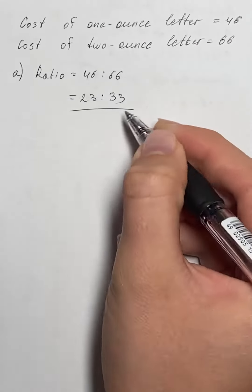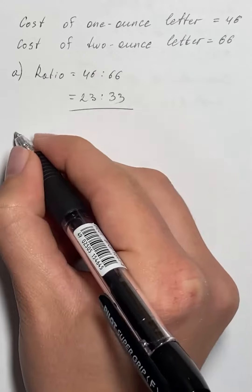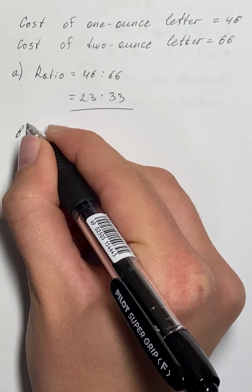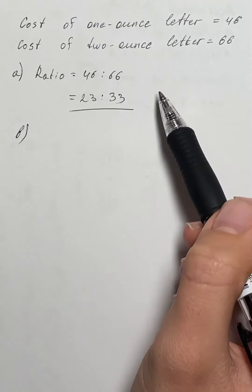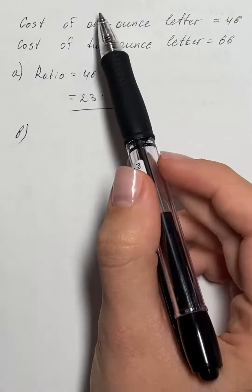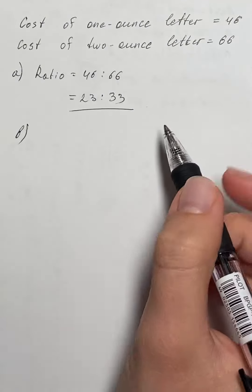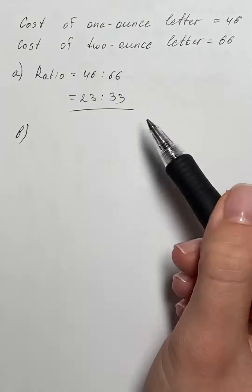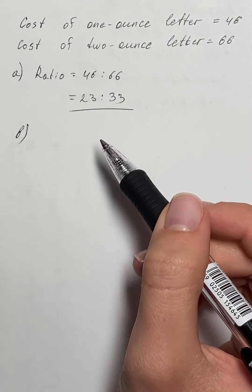So this is our ratio. And now we need to find the ratio as some quantity to one of cost of one-ounce letter and two-ounce letter. So ratio is some quantity to one are generally called as gear ratios.